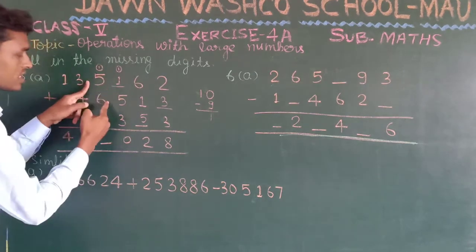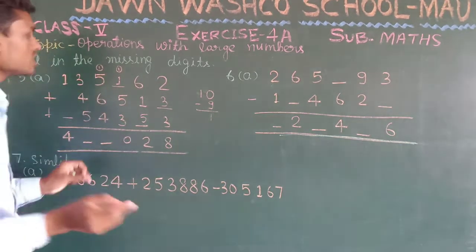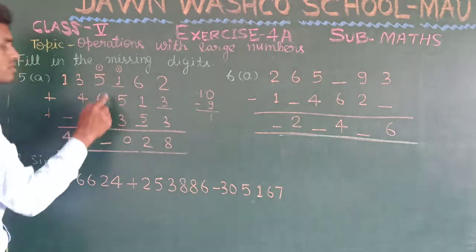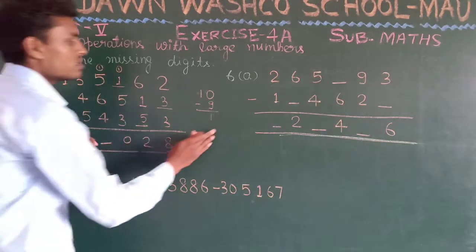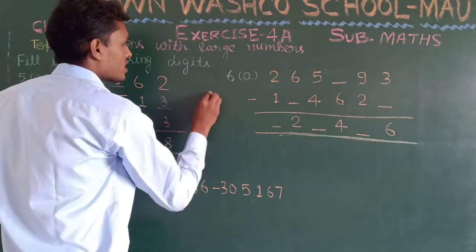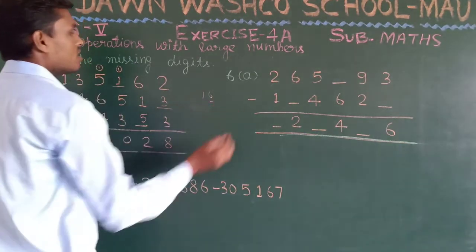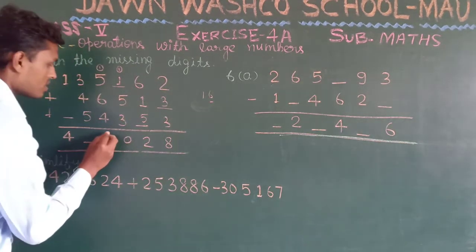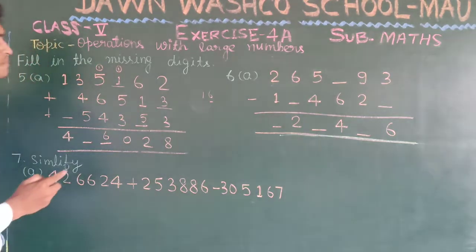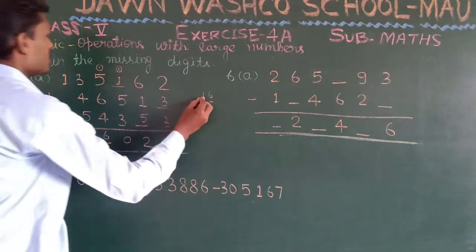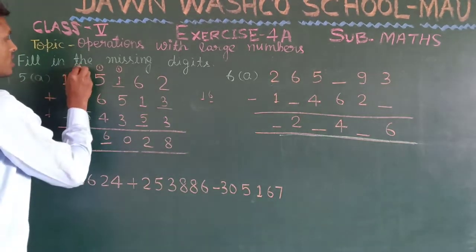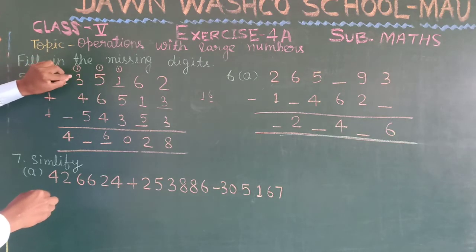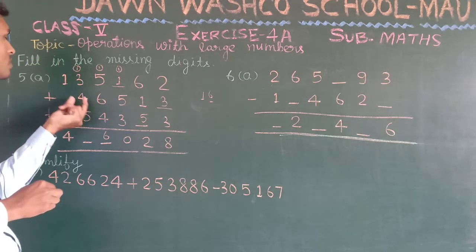Next column: 6, 6, and 6 — yes. Six and six is 12, and 12 plus 4 gives 16. We write the ones digit, which is 6, here and carry 1. Here 3 and 1 is 4, and 4 added to 4 gives 8.